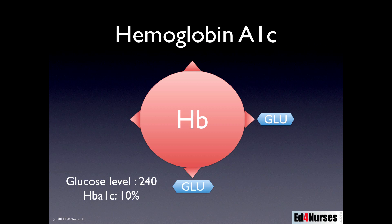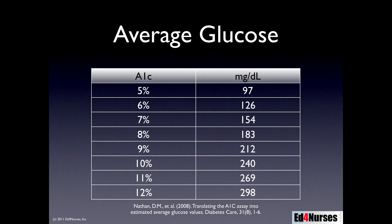To give you an idea of what the hemoglobin A1C means in terms of average glucose: in this study, they found the average glucose in milligrams per deciliter associated with the hemoglobin A1C. An A1C level of 5 indicated an average glucose of about 97; a hemoglobin A1C level of 6 corresponded to 126, and so on. You can see that our average blood glucose level goes up considerably with each percentage point on our A1C level.